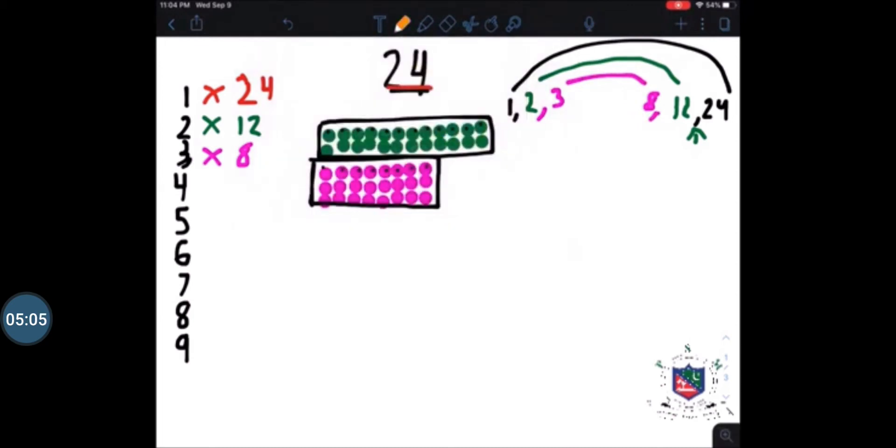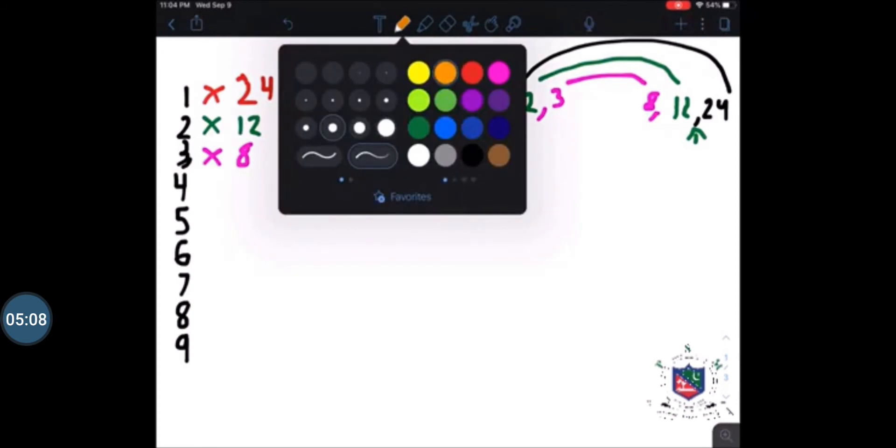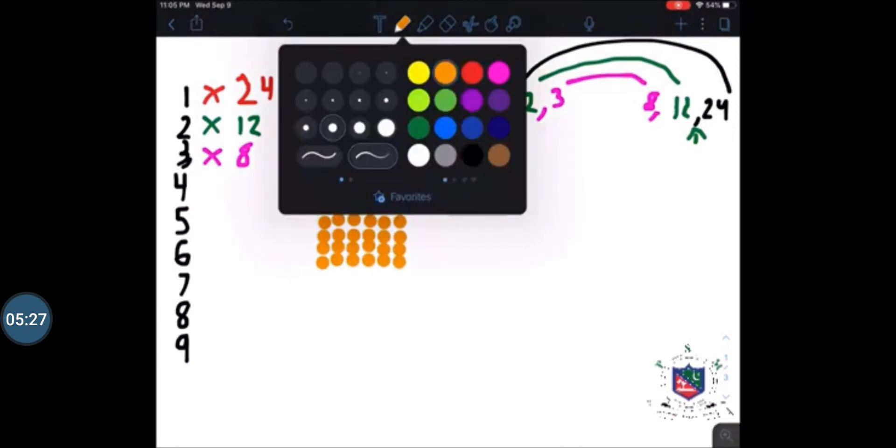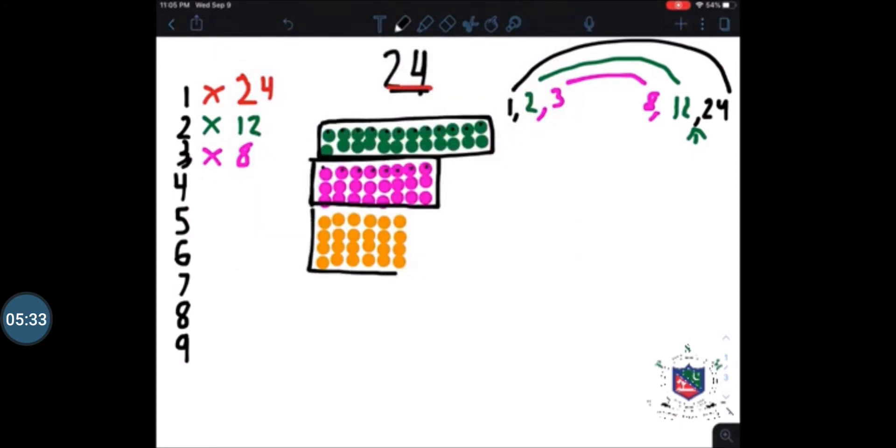The next number that we have to try is 4. We continue the same process - 1, 2, 3, 4, 5, 6, 7, 8, 9, 10, 11, 12, 13, 14, 15, 16, 17, 18, 19, 20, 21, 22, 23, 24. Now let us check - is it a complete rectangle? Yes, we have the complete rectangle. Now we can count the columns - these are 6. So we have 4 rows and 6 columns, so 4 times 6 is 24. We can add it here.